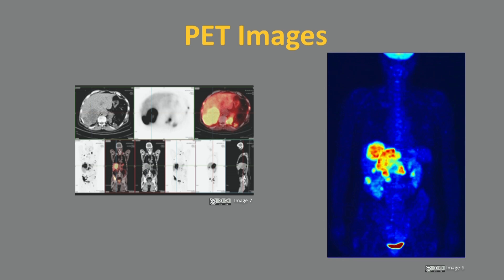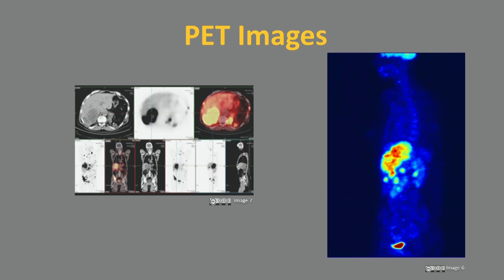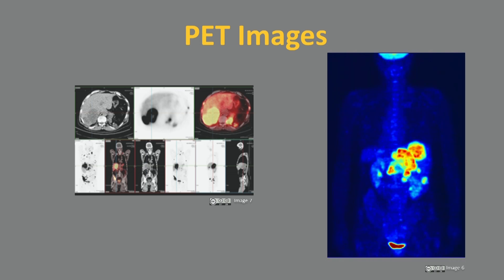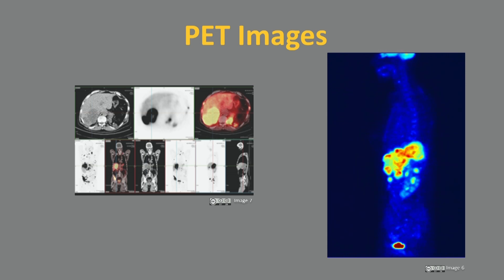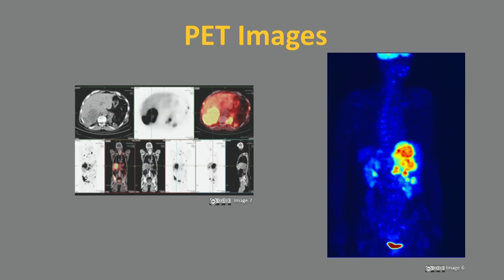PET has applications in oncology, neurology, cardiology and pharmacokinetics. The rotating PET image on the right is an example of a maximum intensity projection showing normal radiopharmaceutical uptake, here for example in the bladder and also in the brain.